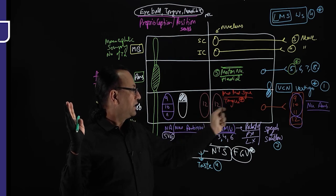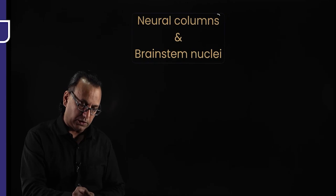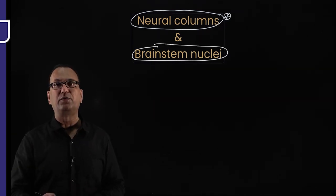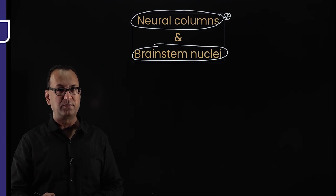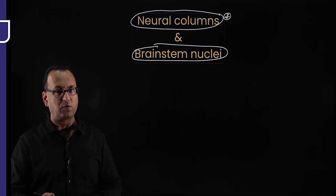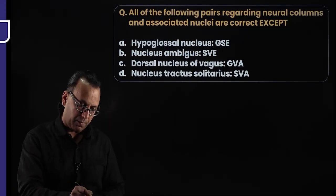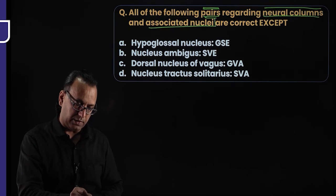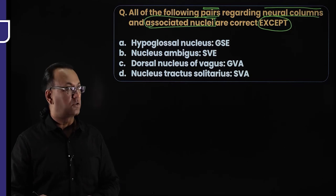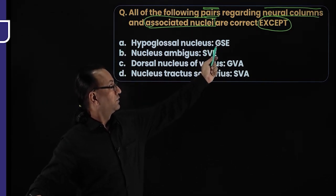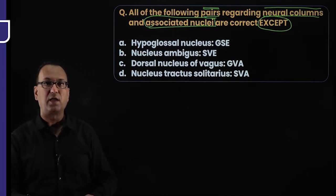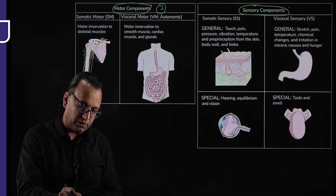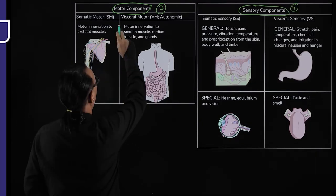In this discussion, we will talk about seven neural columns and make a table aligning them with the corresponding brainstem nuclei. There are three motor columns and four sensory columns. Motor columns control skeletal muscles or visceral muscles. Most skeletal muscles are under the GSE neural column — general somatic efferent — while a small group of pharyngeal arch muscles are SVE, special visceral efferent.